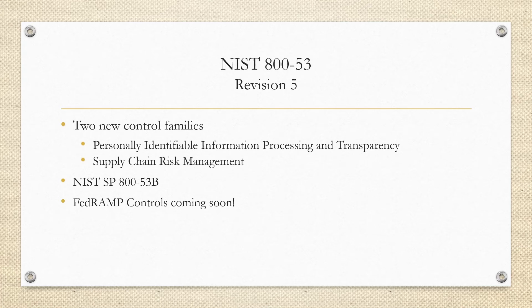The Supply Chain Risk Management control family integrates supply chain risk management aspects throughout the other control families to help protect your system components, products, and services that are part of critical systems and infrastructure. These controls help ensure that security and privacy requirements, threats, and other concerns are addressed throughout your system development lifecycle and your supply chain. There's going to be a lot of work to be done within this family, so I'd definitely look at it specifically.